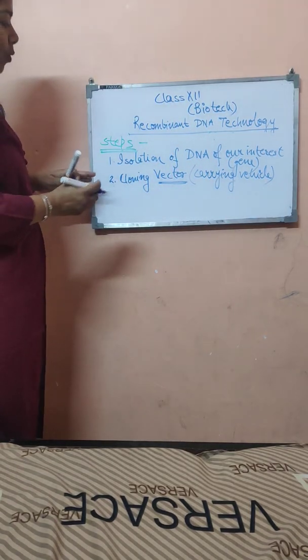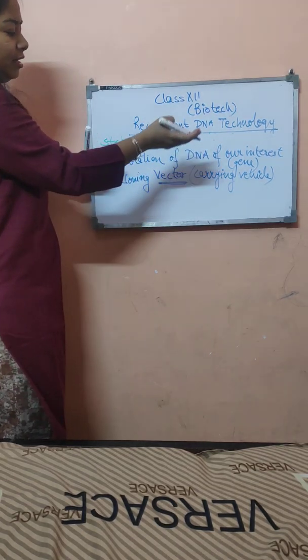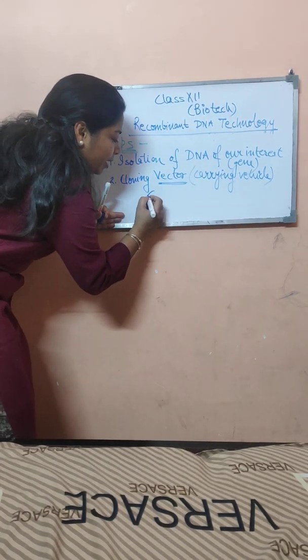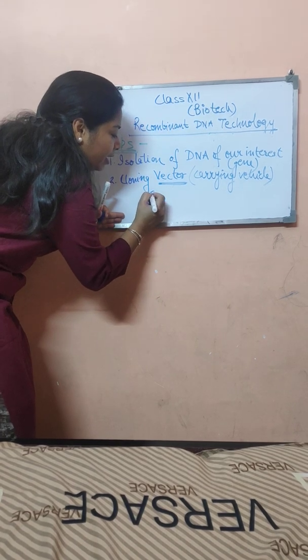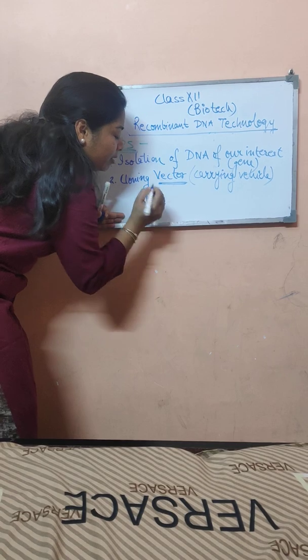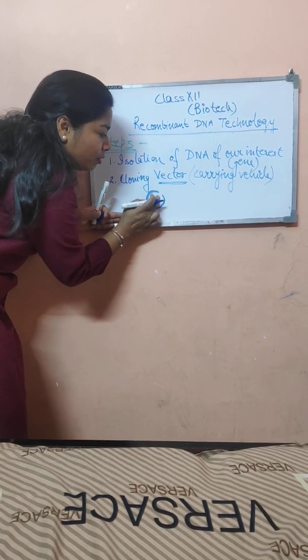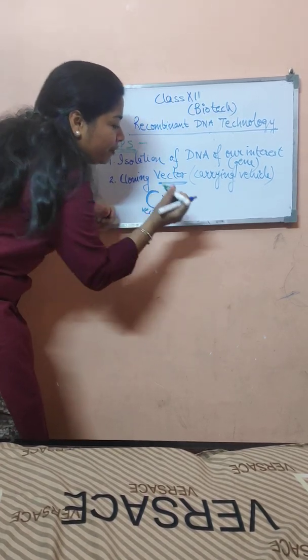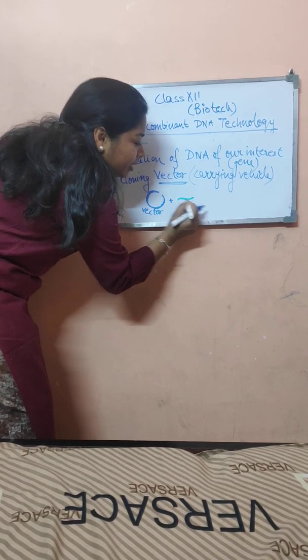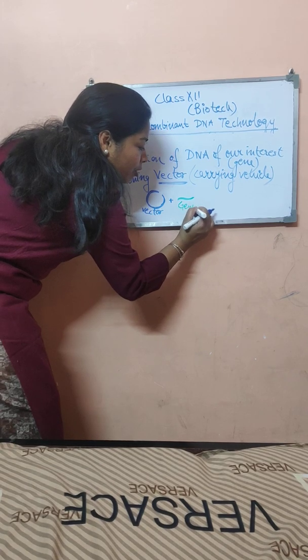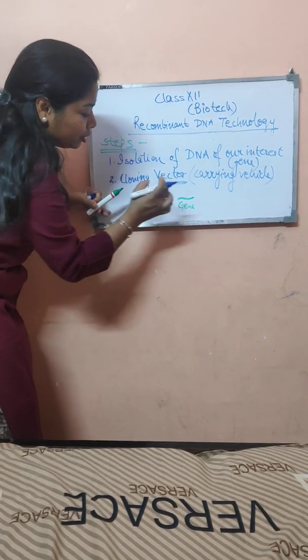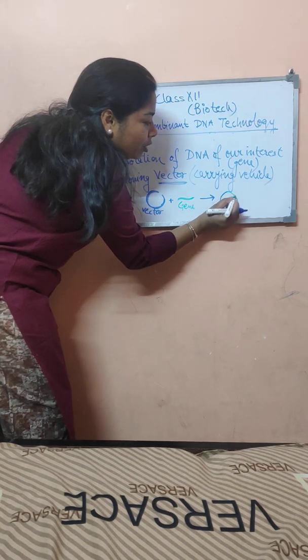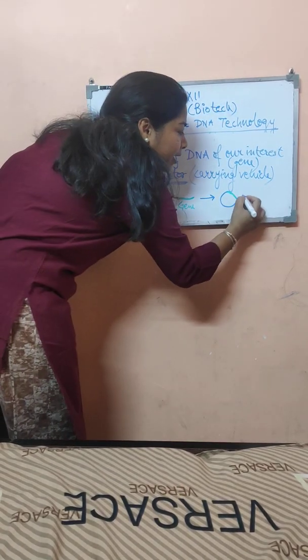And now when we insert the DNA of our interest into the vector, this becomes a recombinant DNA molecule. Say this is a vector. This vector is to be cleaved at a particular place, and the gene of interest which we have isolated should be put into the vector. And this resulting molecule is known as the recombinant DNA.